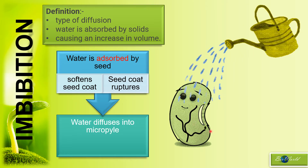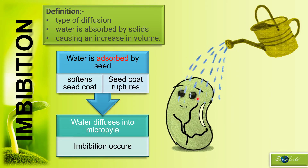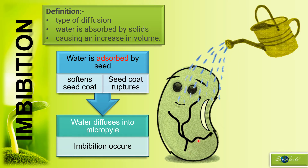The water will diffuse into the seed through the tiny hole that used to be the micropyle in the embryo sac. Once water has gone inside, it will increase the volume of the seed — that is the process we call imbibition. As the seed expands, the rupture of the seed coat will also expand, causing the seed coat to fall off.